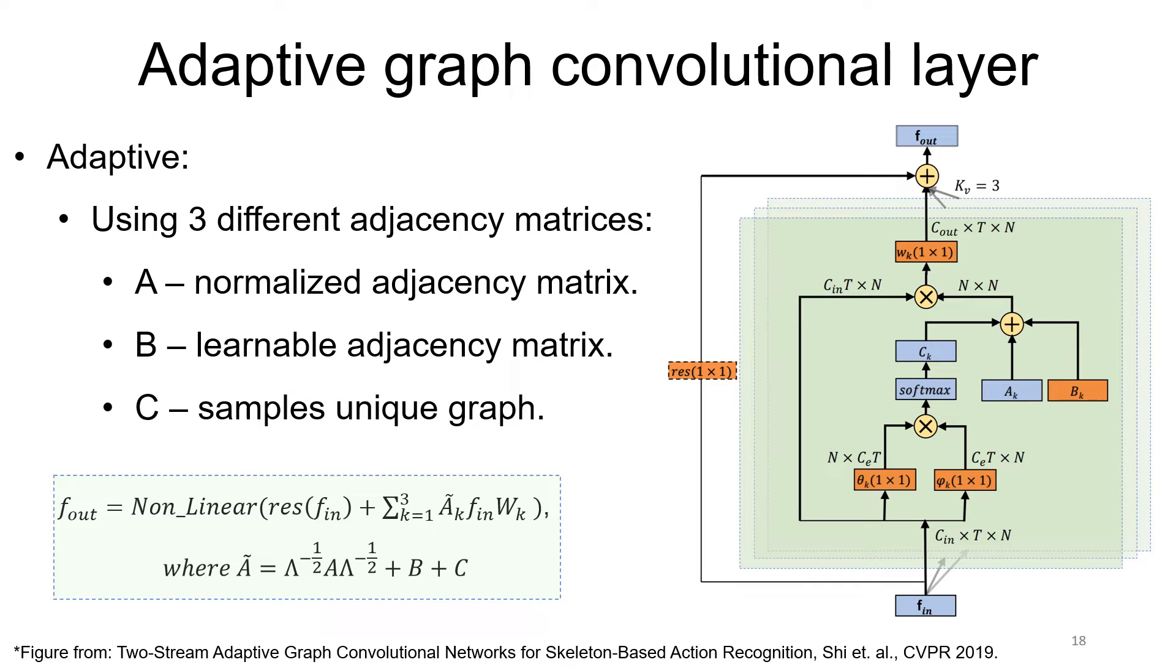When adding all three matrices, B and C produce a layer-specific adjacency matrix, which is more suitable for the task in hand. A emphasizes the immediate neighbors, that is, the short-range dependencies. B is completely learned. And C is somewhat guiding B in its learning process.